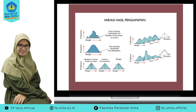Ini merupakan contoh dari hasil pengamatan variasi sampel. Kita lihat satu per satu. Untuk gambar yang pertama, pada sumbu X ini merupakan rata-rata, dan pada sumbu Y ini menunjukkan frekuensi. Gambar di sini menunjukkan sampling terhadap lima kotak serial. Satu kotak di sini menunjukkan satu kali sampling, di mana setiap kali sampling mengambil lima kotak serial. Setiap kotak serial kemudian ditimbang beratnya, dan dari lima kotak yang kita sampling, kita rata-ratakan beratnya berapa.